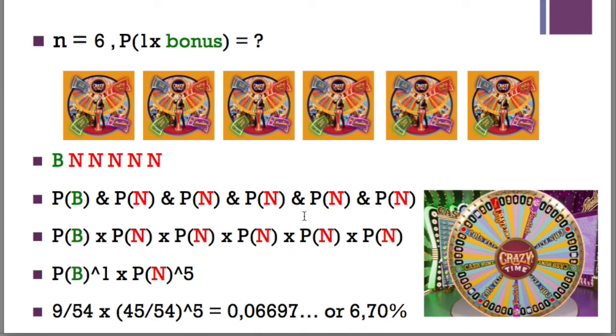Now the moment you say AND in probability theory here, you need to multiply the chances and the probabilities. So you get the probability there will be a bonus round one time, so to the power of one, and five times no bonus game, the probability of N to the power of five. So what's the chance? There will be a bonus game - nine divided by 54 sections in total, and that's the chance there will be a bonus game, and 45 divided by 54 to the power of five. Multiply everything, and you get 6.70%.